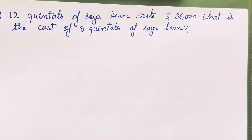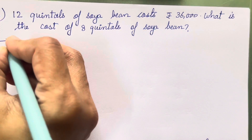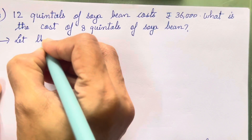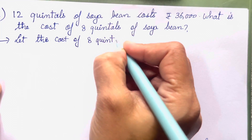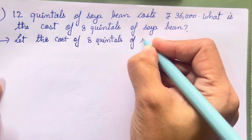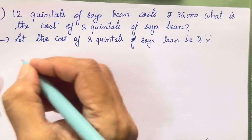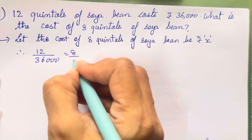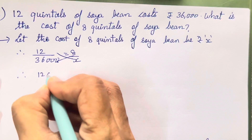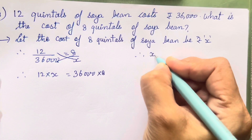Let's move on to the 4th question. 12 quintals of soya bean cost rupees 36,000. What is the cost of 8 quintals of soya bean? So let the cost of 8 quintals of soya bean be rupees x. Arrange: 12 upon 36000 = 8 upon x. Cross multiply: 12 into x is equal to 36,000 into 8.